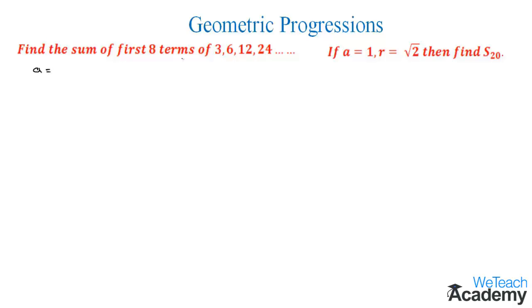In the given series, we have the value of a as 3 and r would be the common ratio, which is the ratio between any two terms. The ratio between the first two terms would be 6 divided by 3, and we know that its value is 2.